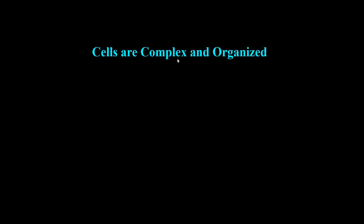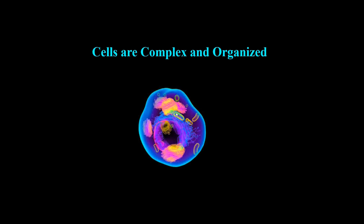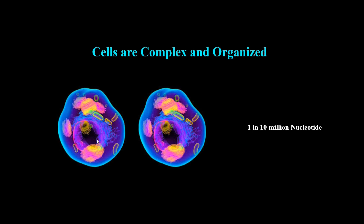Cells are also highly complex and organized. Keep in mind, if something is more complex, it means it will be more accurate in functioning. That's why the parts of cells are always in their proper place and perform functions with high accuracy. For example, during DNA duplication, the chance of error is less than one mistake every 10 million nucleotides — a really high precision process. Cells also work in an organized way, with each cell being aware of what chemical processes are happening in neighboring cells.